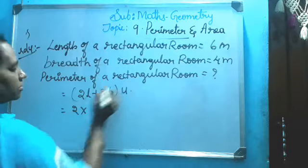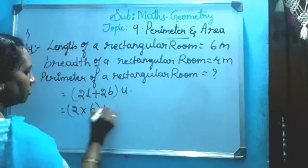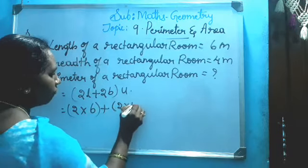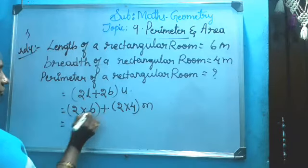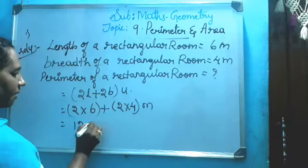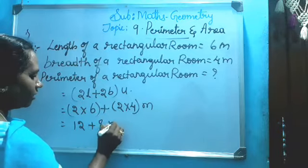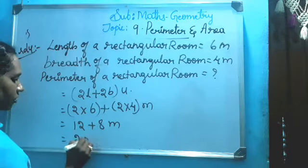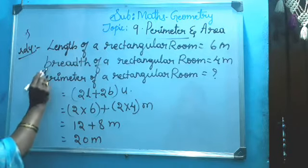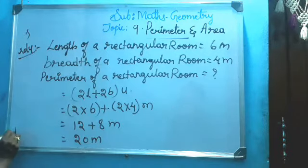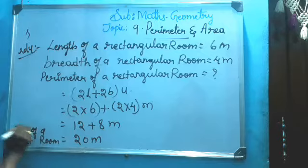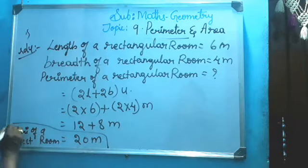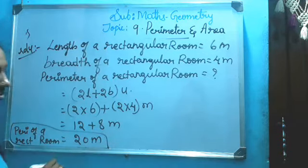2 into 6 plus 2 into 4 meters. Six twos are 12, plus four twos are 8. Total is 20 meters. So perimeter of a rectangular room is 20 meters.